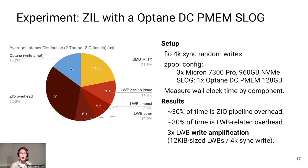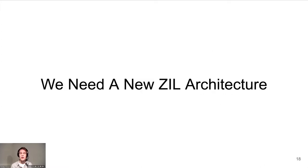Only 14% of wall clock time is spent on actual interaction with the hardware. We also observed that LWBs are sub-optimally sized — there's about 3x write amplification per write. The LWBs being written are 12 kilobytes in size, whereas the actual payload is just over four kilobytes. There's a lot more nuance to this analysis, but it's a good example of what is wrong with the current ZIL and why we should re-architect it for modern hardware.